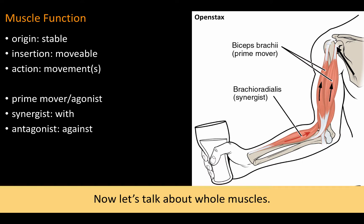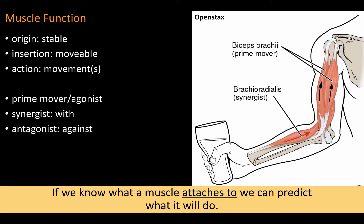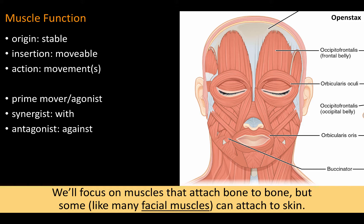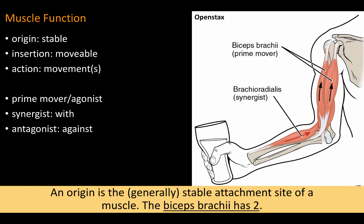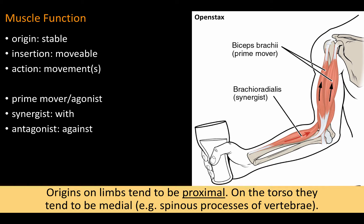Now let's talk about whole muscles. If we know what a muscle attaches to, we can predict what it will do. We'll focus on muscles that attach bone to bone, but some, like many facial muscles, can attach to skin. This is the biceps brachii muscle. We'll use it to look at attachment sites and to discuss muscle movement. An origin is the generally stable attachment side of a muscle. The biceps brachii has two. Origins on limbs tend to be proximal. On the torso, they tend to be medial — for example, spinous processes of vertebrae.